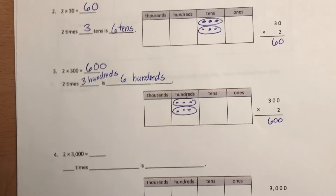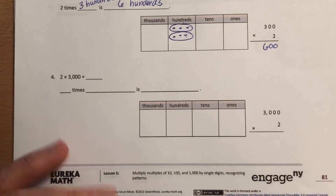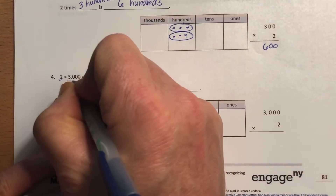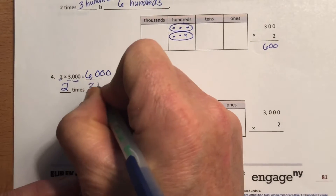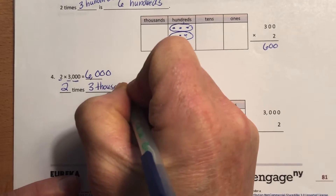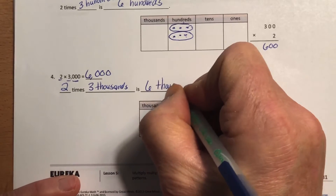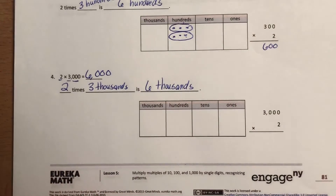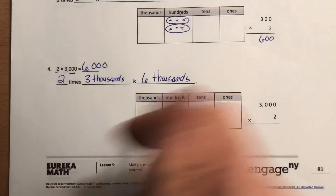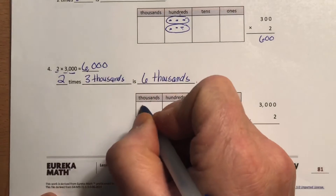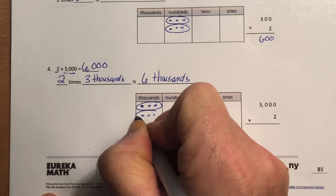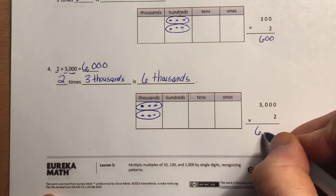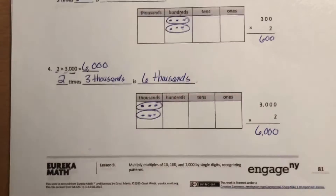Down here is 2 times 3,000. You can imagine what that's going to be. 2 times 3 is 6, but it's in the thousands now, so it's thousands. I've got 2 groups of 3 thousands, equal to 6 thousands. Down here in our place values we see thousands — I have 2 groups of 3 in that place value. Here's a group of 3,000, and here's a group of 3,000. That's 6,000 altogether.